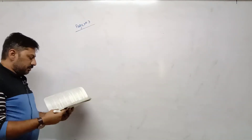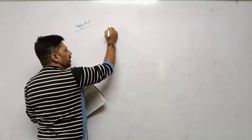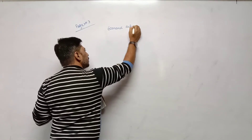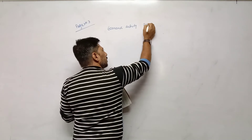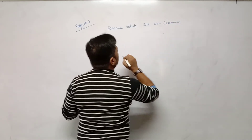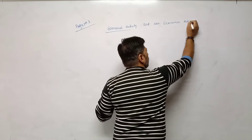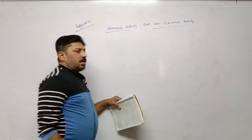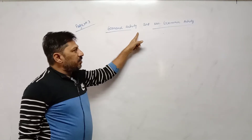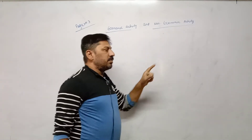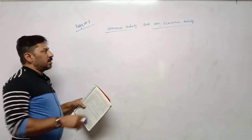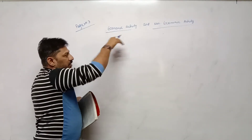Page number three, topic is economic activity and non-economic activity. This topic is important for one or two marks. We have already done this topic in the OC subject, chapter number one, but I am explaining it again.